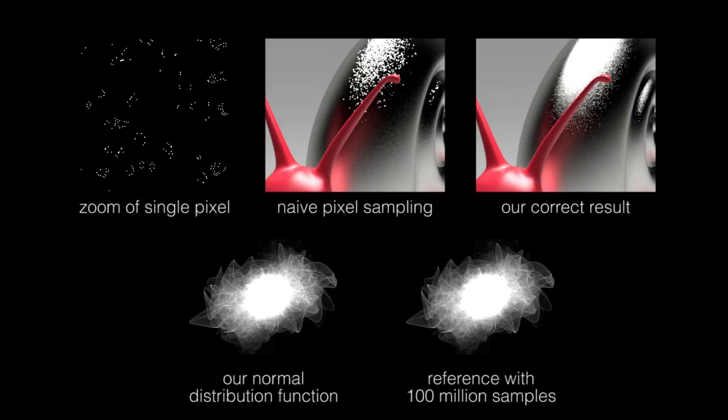Our goal is to simulate this phenomenon using high-resolution normal maps. This is far from trivial, since hitting the tiny reflections by randomly traced rays is extremely inefficient. We instead propose a completely different, deterministic approach based on evaluating the true normal distribution function of each pixel.